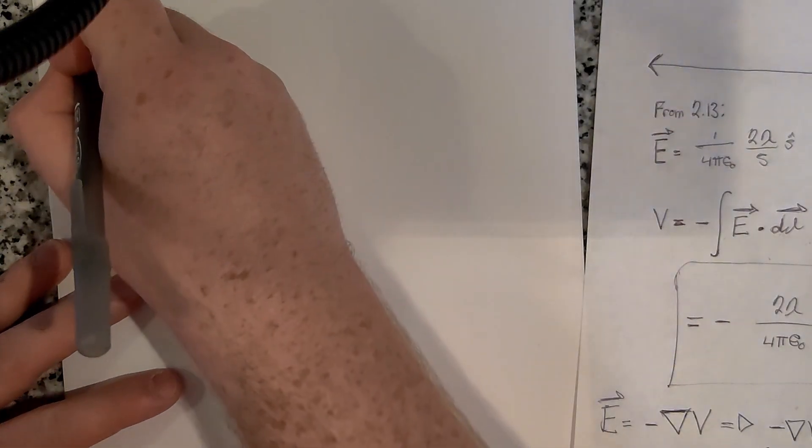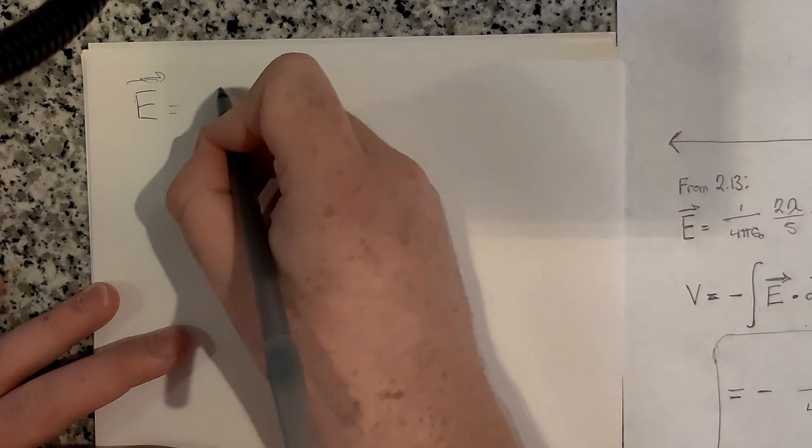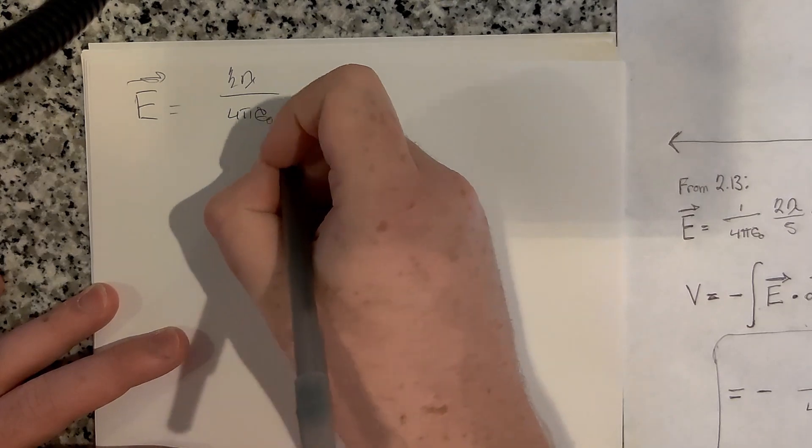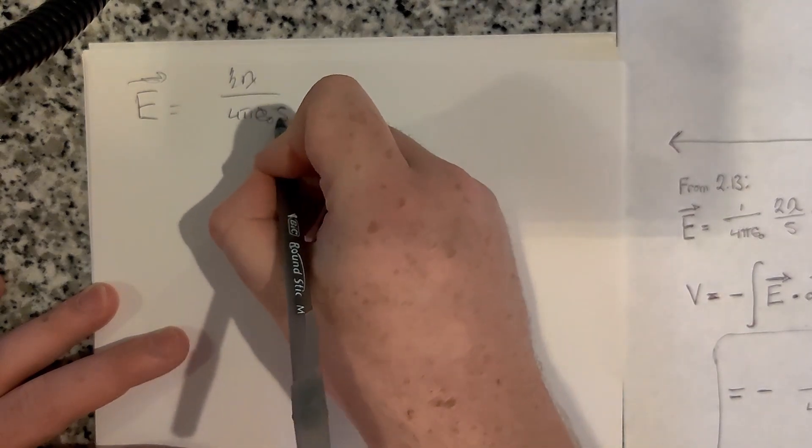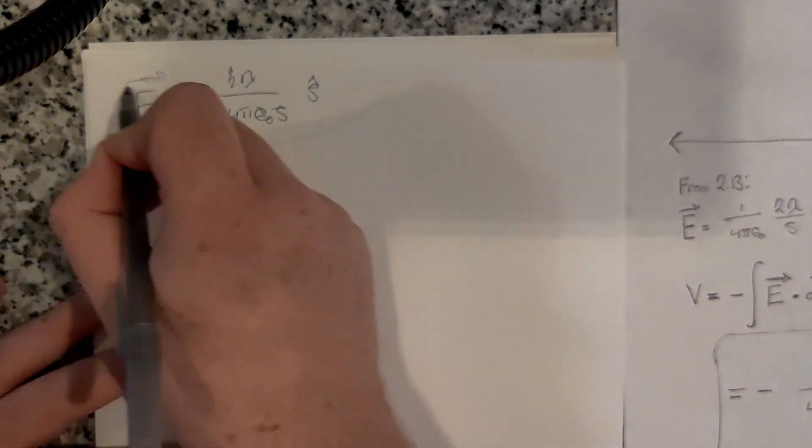The electric field then would just be what we had. It'd be 2λ over 4πε₀ s on the bottom, in the s hat direction, which is what we started with over here.